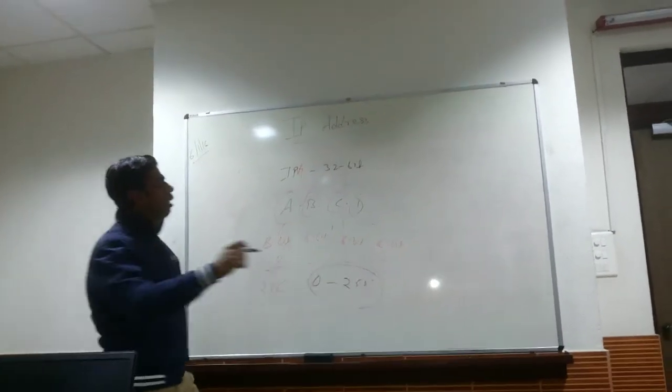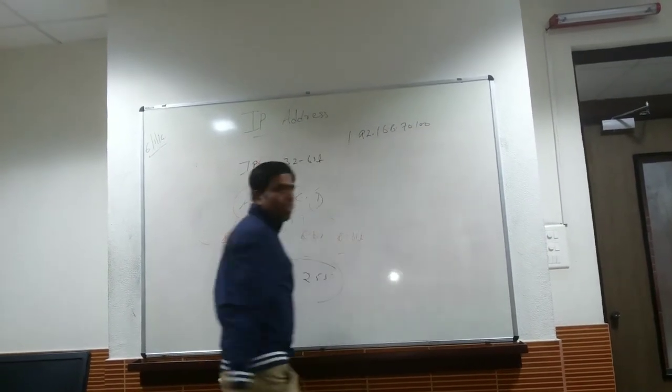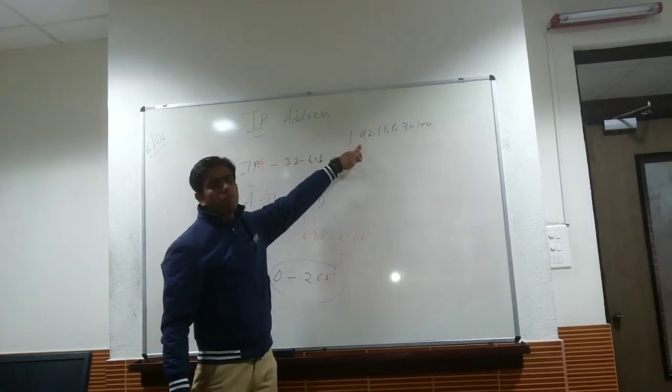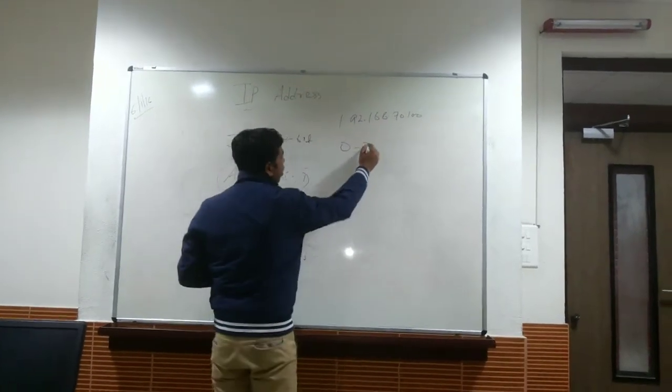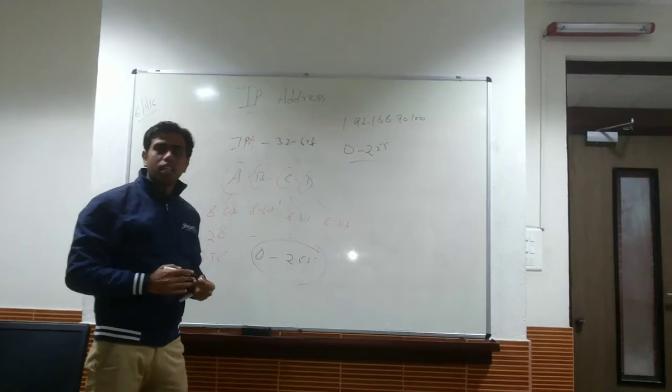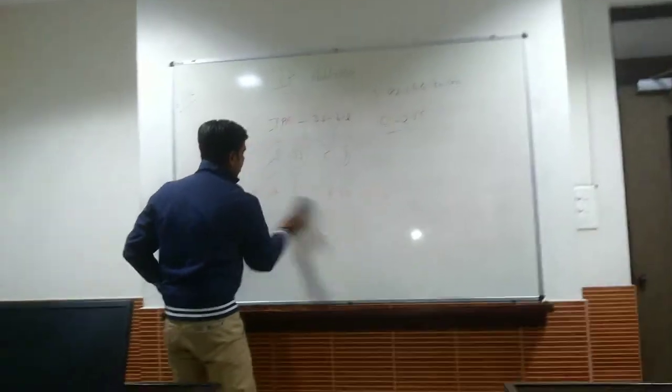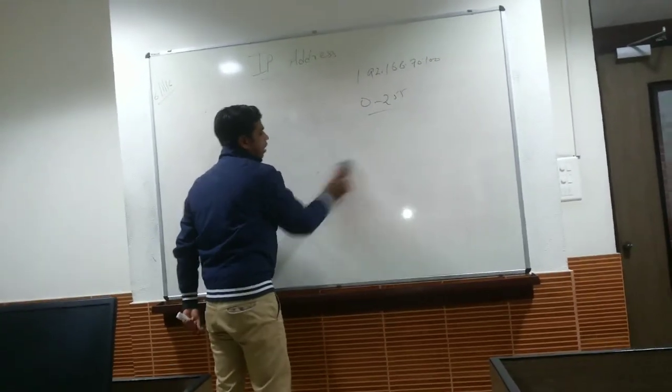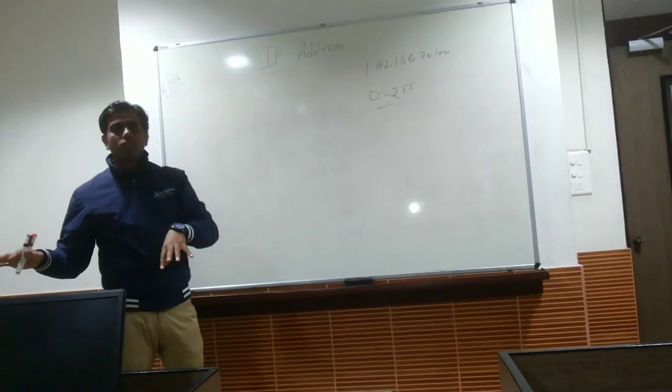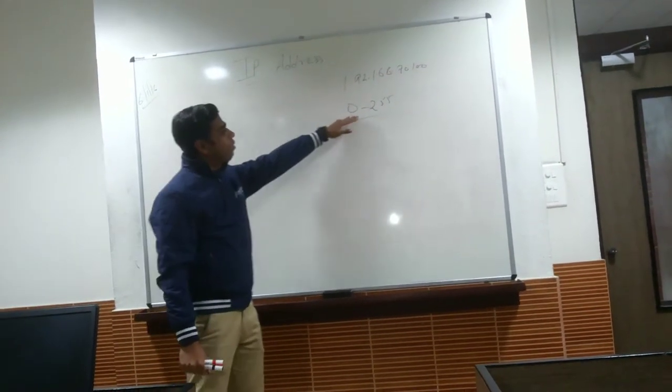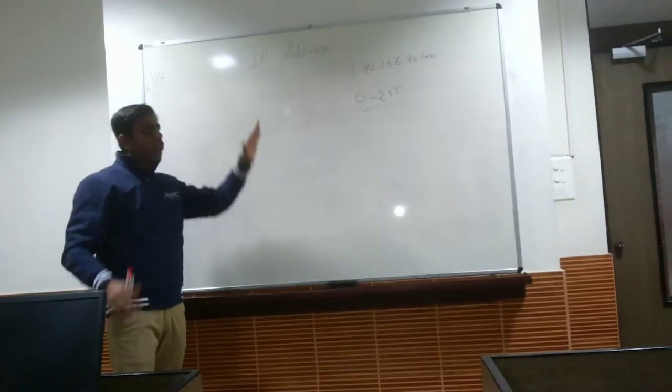And that is the reason, for example, if I am having the IP address like this, then in that case, this particular number cannot be lesser than 0 and it cannot go after 255. Now, this IP address became a logical address to which each of the computers could recognize each other. And it is being divided into 0 to 255. But now, these all IP addresses have been divided into 5 classes.